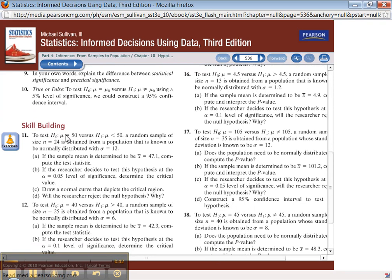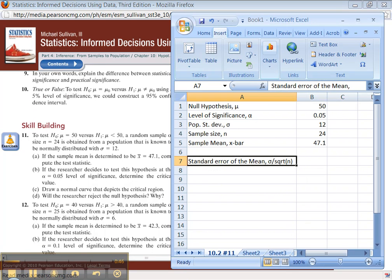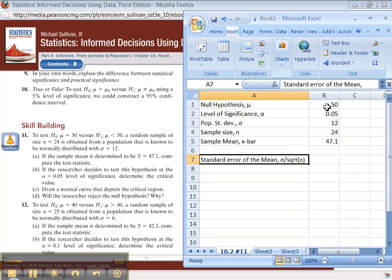So I'm going to start off by doing number 11 right here, which is the left-tailed test. I've already typed in all the information. I have the null hypothesis, the level of significance which is alpha, 0.05, the population standard deviation sigma which is 12, sample size n, and so on.